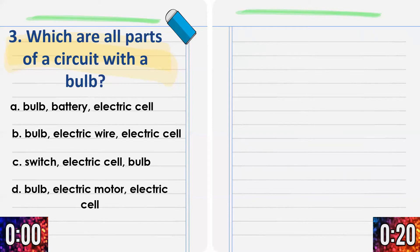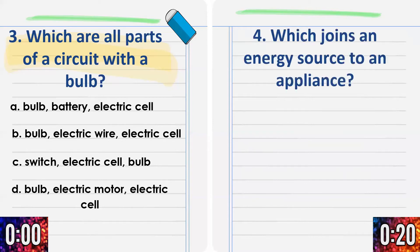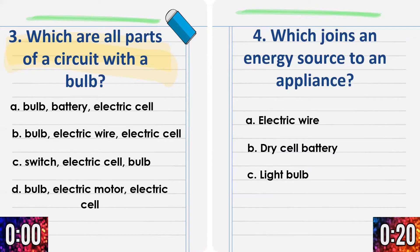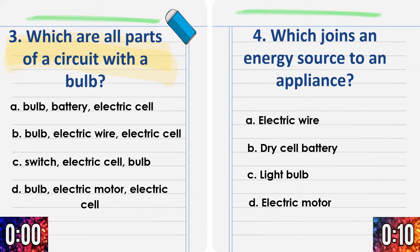Time is up. For number 4: Which joins an energy source to an appliance? A) Electric wire. B) Dry cell battery. C) Light bulb. D) Electric motor. Timer starts now. Which joins the battery to the bulb?